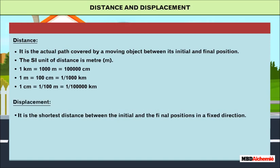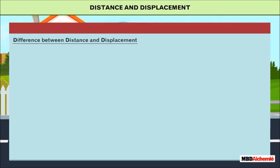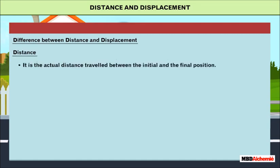Displacement is the shortest distance between the initial and the final positions in a fixed direction. The SI unit of displacement is also the meter (m); other units are centimeter (cm) and kilometer (km).